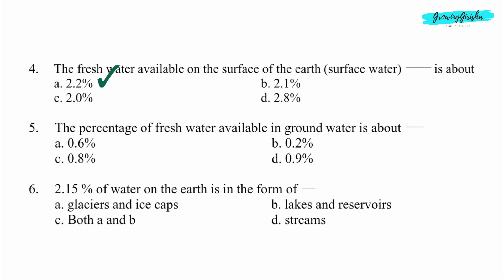Question 5. The percentage of fresh water available in groundwater is about dash. Option A: 0.6%.